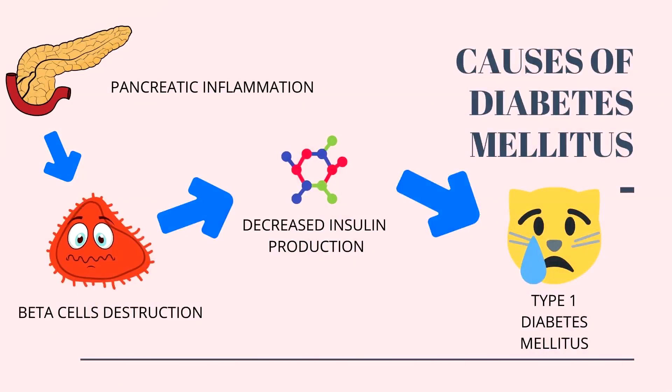The most common cause of diabetes mellitus in cats is the destruction of beta cells in the pancreas. Beta cells are responsible for insulin production. This destruction of beta cells often arises from chronic inflammation of the pancreas. This type of diabetes is known as type 1 diabetes mellitus.